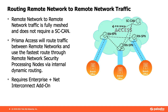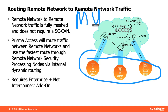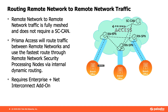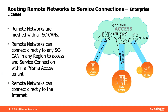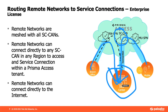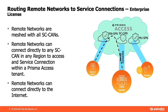For inner-branch connectivity, or for a mobile user to talk to a branch, you need the enterprise licensing model with the interconnect. All devices and users can connect down to a data center through the corporate access node CAN. We need a list of the IP ranges available at the data center. You can use static routes for that, or get more sophisticated and use BGP.